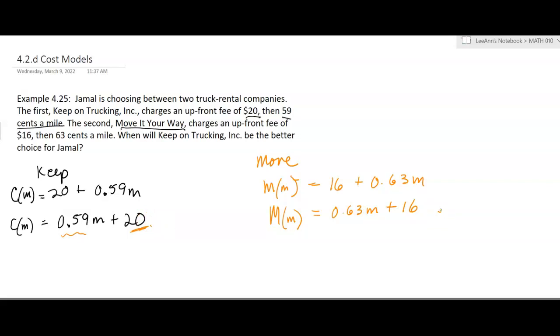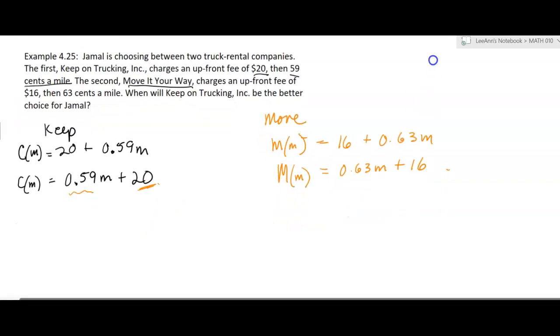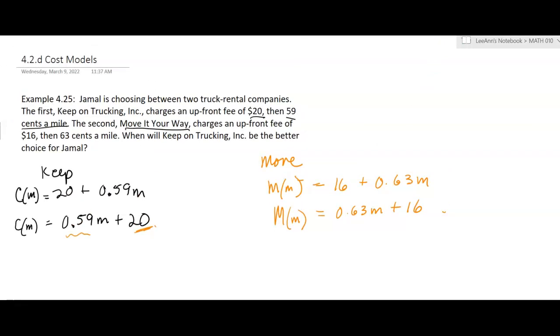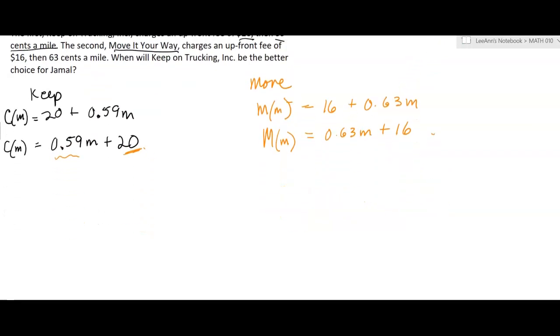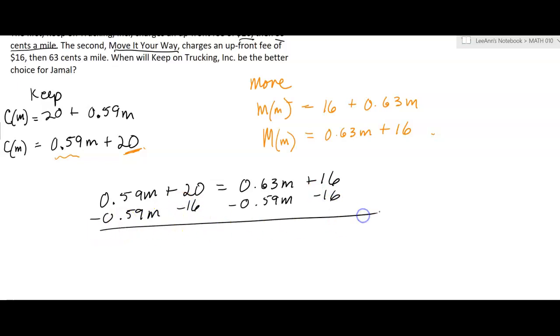Okay. So when will keep on trucking be the better choice for Jamal. Okay. So what we really want to know is when do these two equal each other? So when does 0.59m plus 20 equals 0.63m plus 16? So if I subtract the 0.59, and I subtract the 16, just kind of do two things at once here,